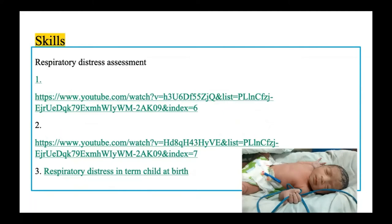Respiratory distress severity in newborns is assessed using scoring systems. Two commonly used systems are the Silverman-Anderson scoring system and the Downes score. The Downes score is preferably used for term babies, while the Silverman-Anderson scoring is useful for both term and preterm babies. Use whichever scoring system you are comfortable with.